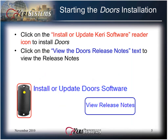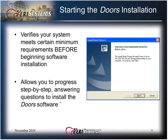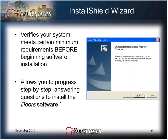To start the DOORS installation, click on the reader icon to install the DOORS software. If you would like to review the release notes, click on the View Release Notes link. The Install Shield wizard verifies your system meets certain minimum requirements before beginning the software installation, and it allows you to progress step-by-step through the installation process. Click the Next button to begin the installation.